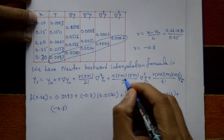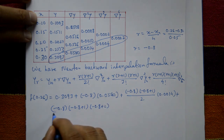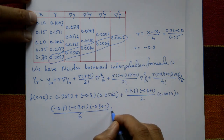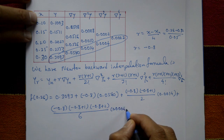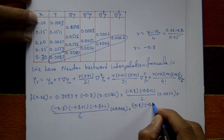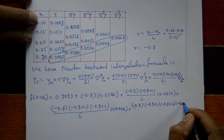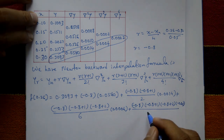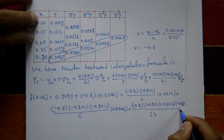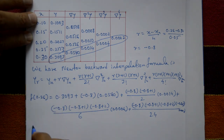Continuing: plus [(−0.8)(−0.8+1)(−0.8+2)] / 3! × 0.0004, where 3! = 6 and the third backward difference is 0.0004. Plus [(−0.8)(−0.8+1)(−0.8+2)(−0.8+3)] / 4! × 0.0002, where 4! = 24 and the fourth backward difference is 0.0002.